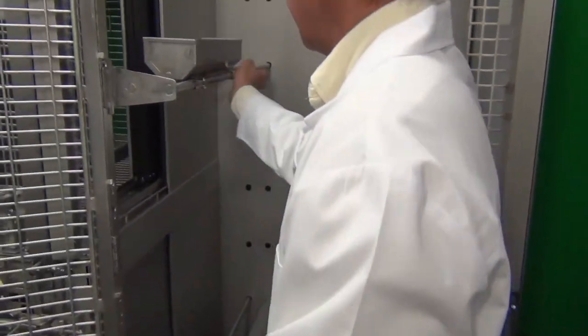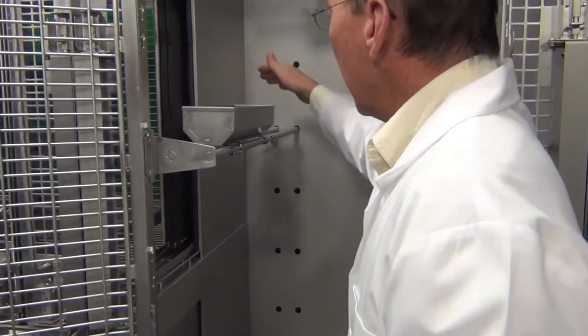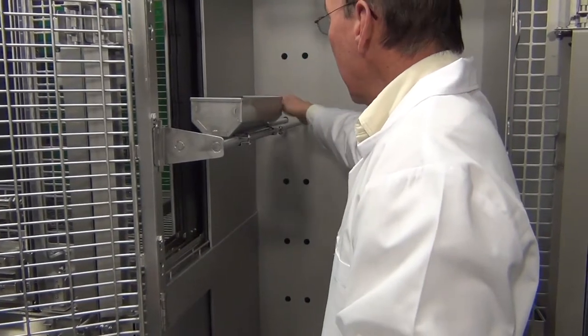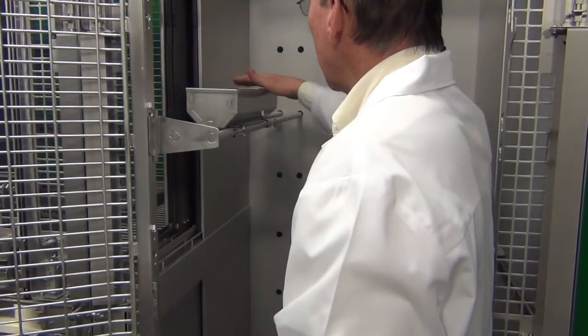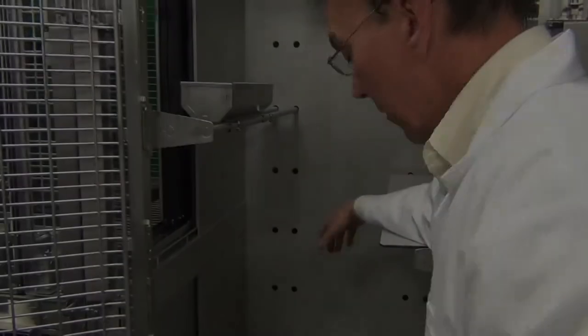We also have a foraging pan system. You can put anything you like in here: treats, fruit, hay, cookies. Primates can climb up here, they can sit, they can perch, they can swing, hold on, they can forage, and then they can retreat.